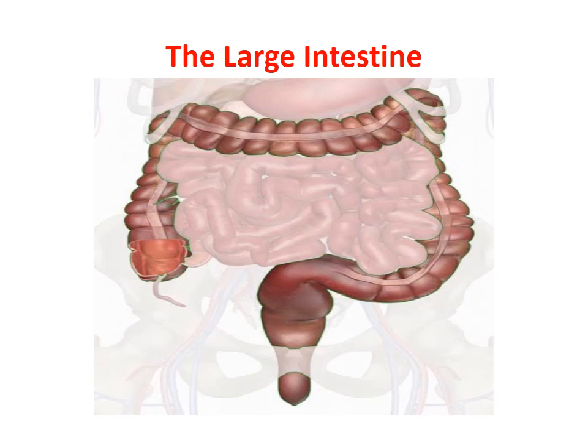Some portion of food — for example, the fibers present in vegetables and fruits — cannot be digested by our body. That part of food makes its way to the large intestine. The large intestine is not actually long; it is only 1.5 meters long, but it is larger in diameter. The small intestine is thinner in diameter, which is why it is called small intestine.